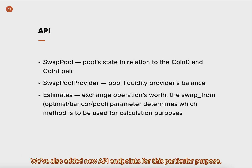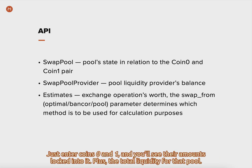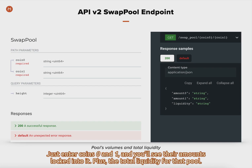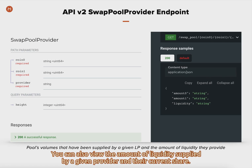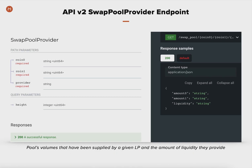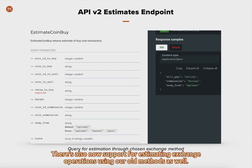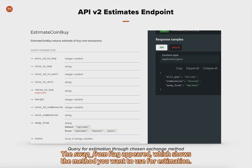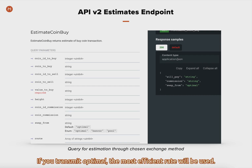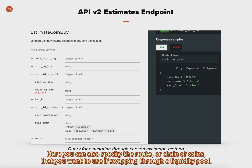We've also added new API endpoints for this particular purpose. A swap pool endpoint lets you check the pool's state in relation to a given pair. Just enter coin 0 and 1 and you'll see their amounts logged into it, plus the total liquidity for that pool. You can also view the amount of liquidity supplied by a given provider and their current share. There is also now support for estimating exchange operations using our old methods as well. The swap from flag appeared, which shows the method you want to use for estimation. If you transmit optimal, the most efficient rate will be used. The response will say which one was used — Bancor or via pool. Here you can also specify the route or chain of coins that you want to use if swapping through a liquidity pool.